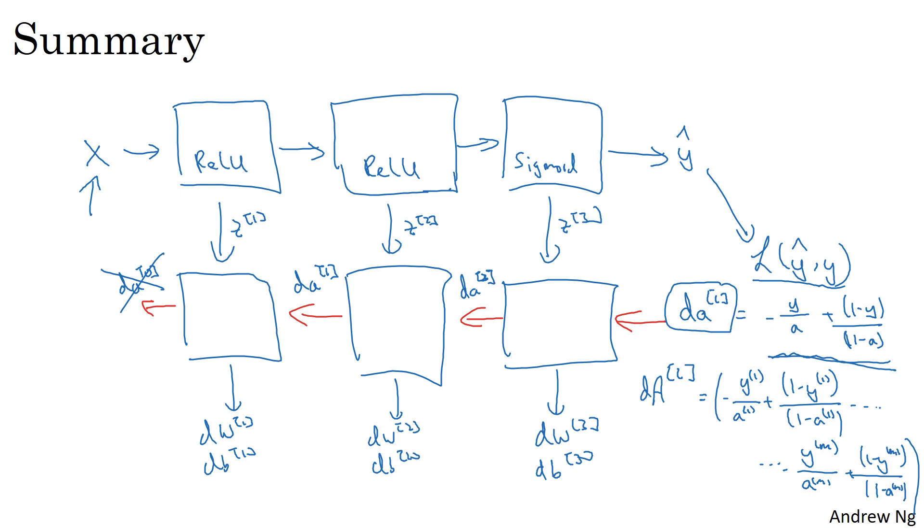You've now seen the basic building blocks of both forward propagation as well as backpropagation. Now, if you implement these equations, you will get a correct implementation of forward prop and backprop to get you the derivatives you need. You might be thinking there's a lot of equations, I'm slightly confused, I'm not quite sure I see how this works.